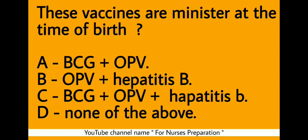Next question. These vaccines are administered at the time of birth. Option A, BCG plus OPV; option B, OPV plus hepatitis B; option C, BCG plus OPV plus hepatitis B; option D, none of the above. The correct option is C. At the time of birth, BCG, OPV, and hepatitis B vaccines are administered.